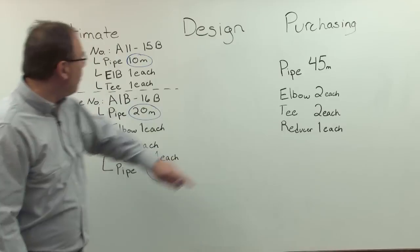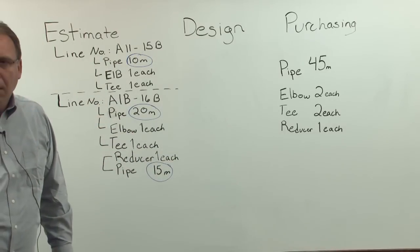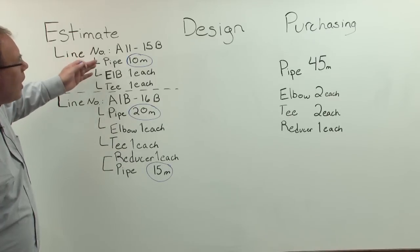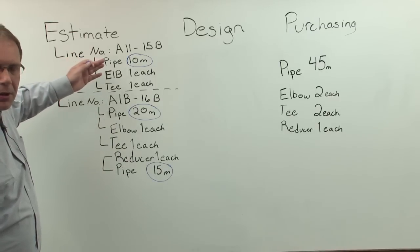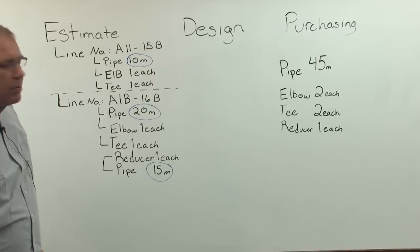And the same for elbows. So we have two elbows and we have two Ts and one reducer. So that's normal. And this obviously, now, as I said, the engineering world is changing. So something is happening. So how do you deal with this?